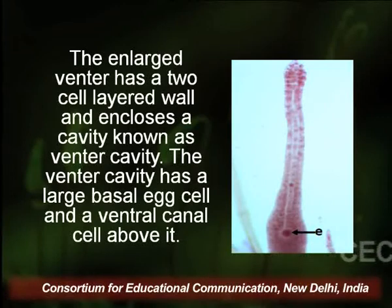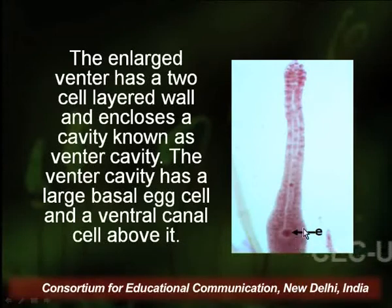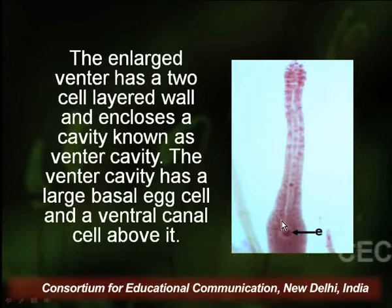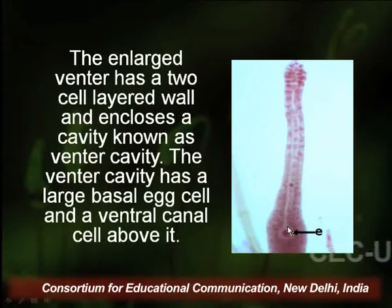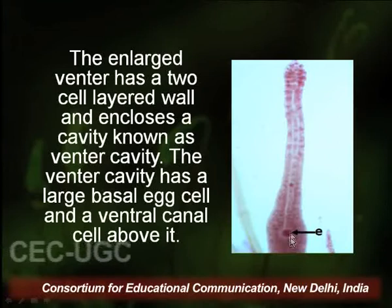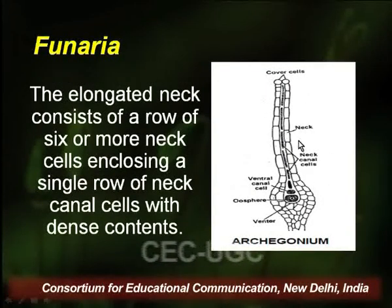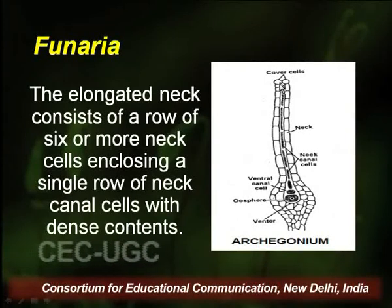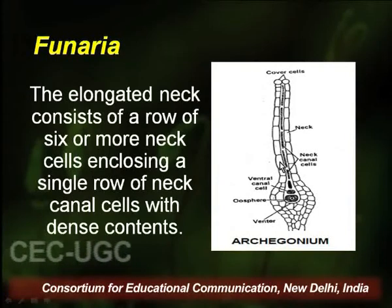If we enlarge one Archegonium, the enlarged venter has a two-celled layer wall enclosing a cavity known as the venter cavity. The venter cavity has a large basal egg cell, and just above the egg cell is found one large venter canal cell. The elongated neck consists of a row of 6 or more neck cells enclosing a single row of neck canal cells. These neck canal cells have dense cytoplasm and during the process of fertilization they dissolve and provide a chemotactic pathway to the antherozoids.